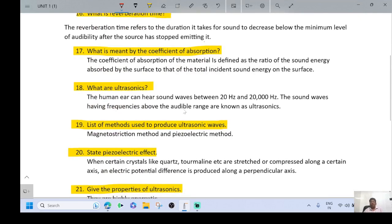See the 18th question: What are ultrasonics? The human ear can hear sound waves between 20 hertz and 20,000 hertz. The sound waves having frequencies above the audible range are known as ultrasonics. Below the audible range are called infrasonics.